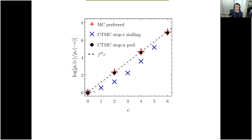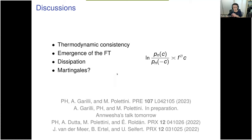Here I just show you if you try to plot the marginal fluctuation relation for a continuous time Markov chain at stopping t. We start at stalling, which would be the best candidate for satisfying the fluctuation relation. The fluctuation relation is not satisfied. Using the stopping n criteria, these black bullets, it satisfies the fluctuation relation. Sorry, I have to rush a bit now.